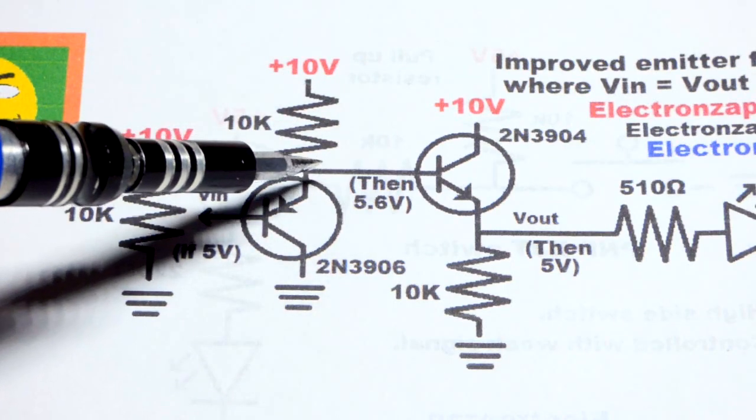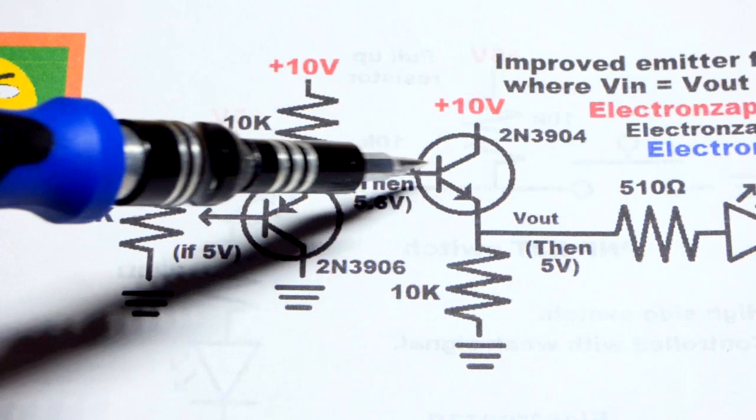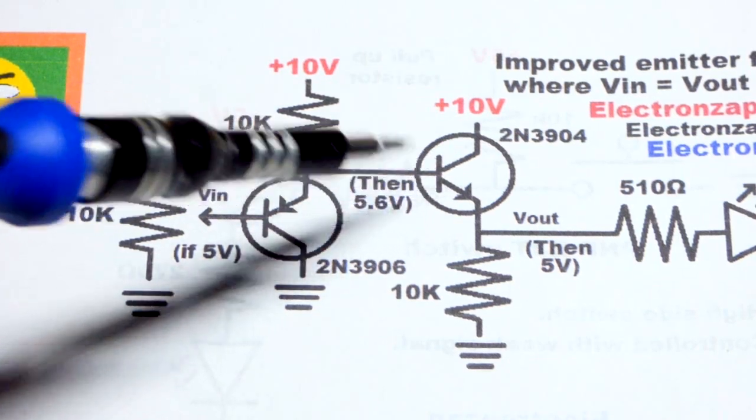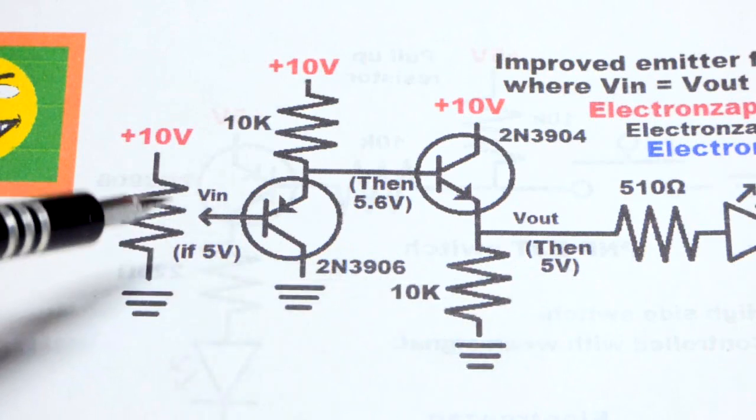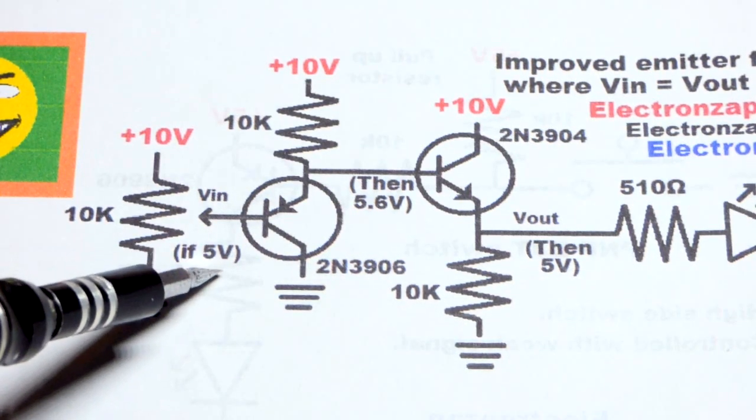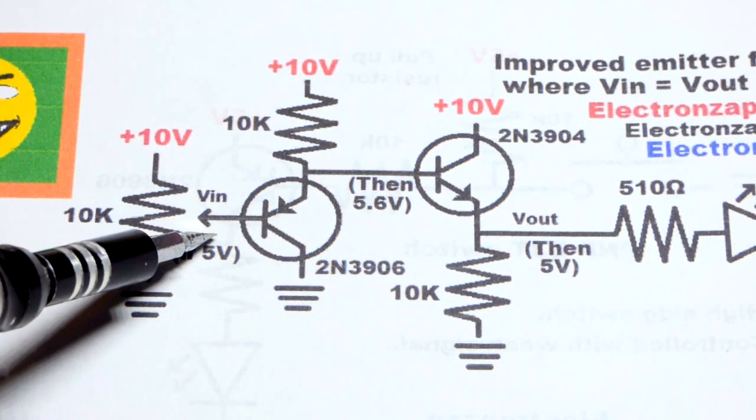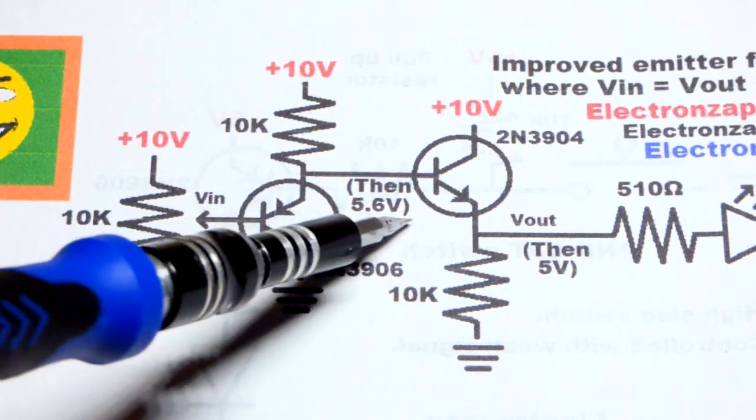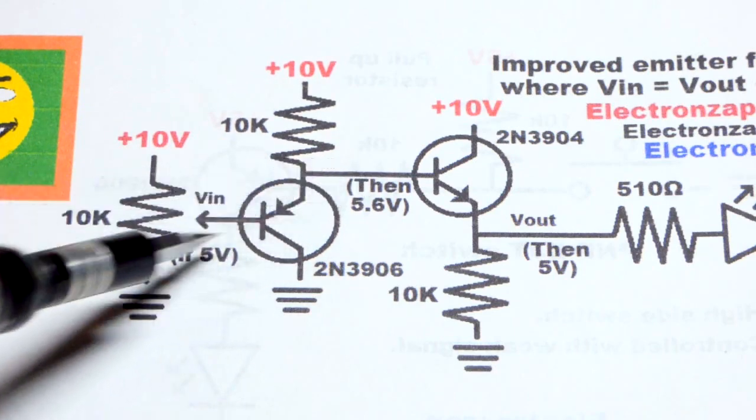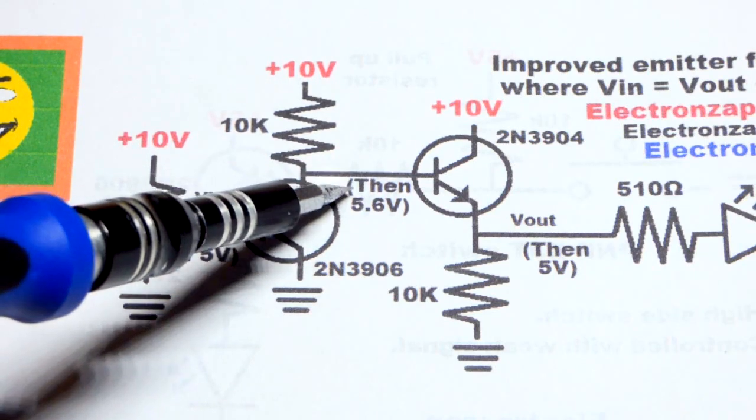But you can build up that voltage there and feed it to the base of an NPN transistor which will then drop that voltage down and ultimately you end up with the voltage you started with. So 5 volts in, really no current is needed to get 5.6 volts out up there.